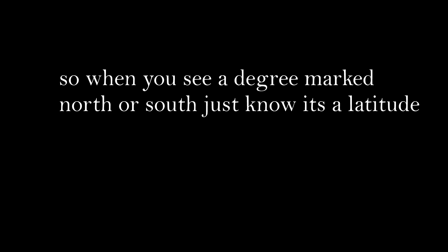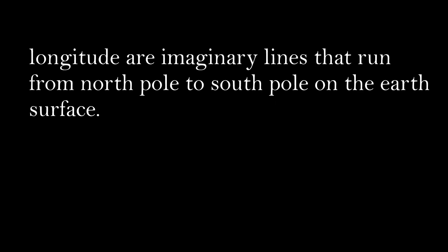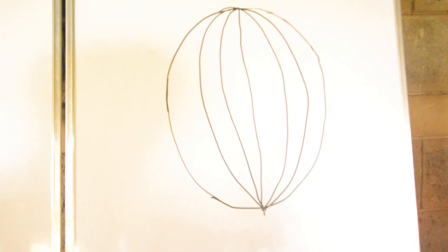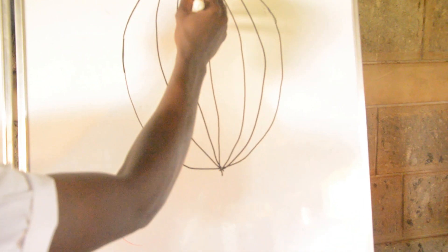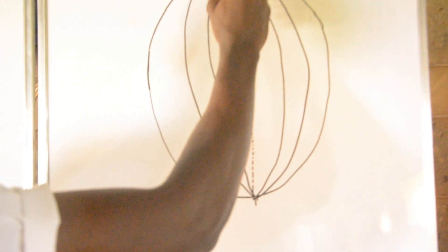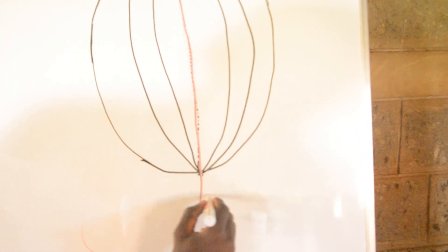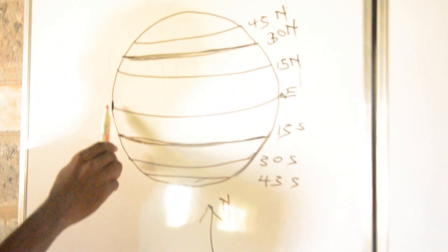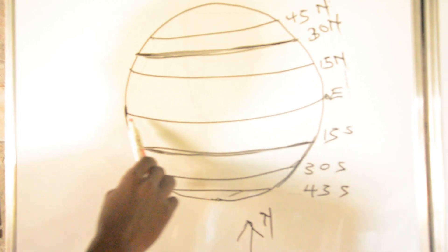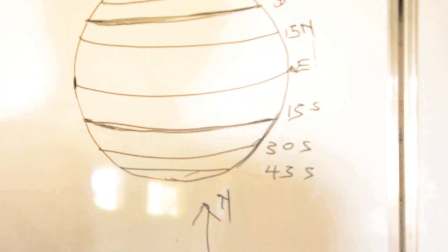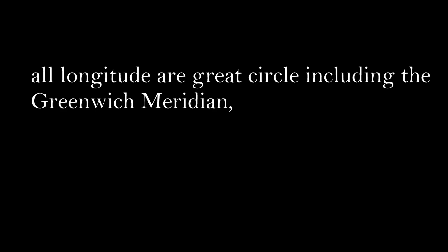From there we move to longitudes — imaginary lines that run from the north pole to the south pole. We have one important longitude found in the middle called the Greenwich Meridian, and it's marked zero degrees. On the latitudes, all latitudes are small circles except the equator which is the great circle. Similarly, all longitudes are great circles, including the Greenwich Meridian, but the Greenwich Meridian is the one that marks zero degrees.